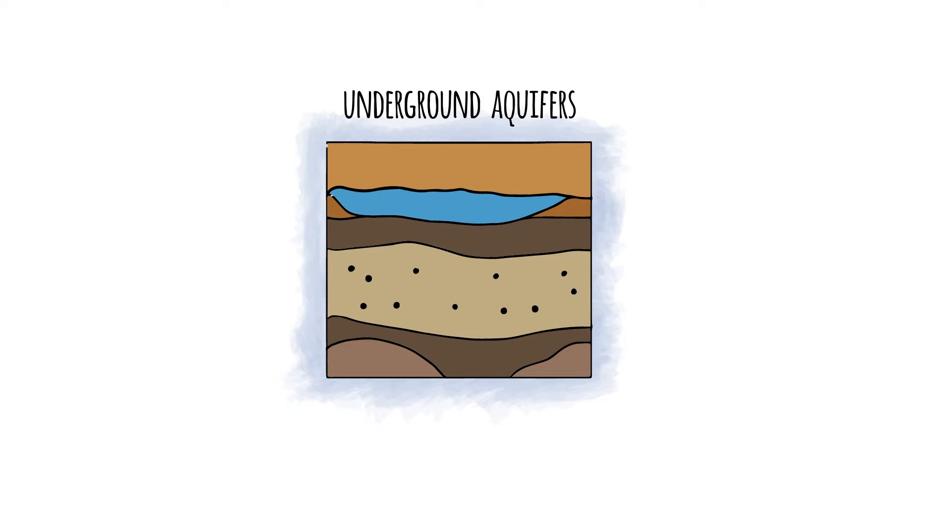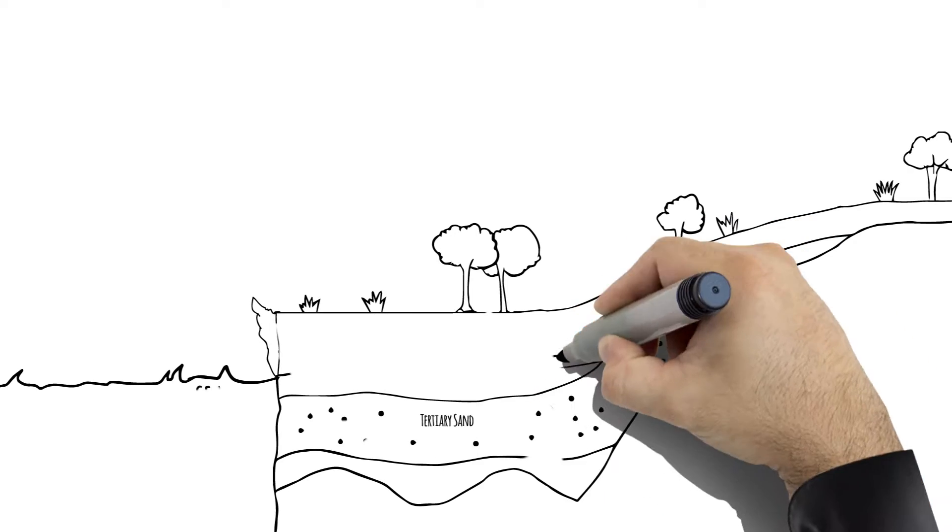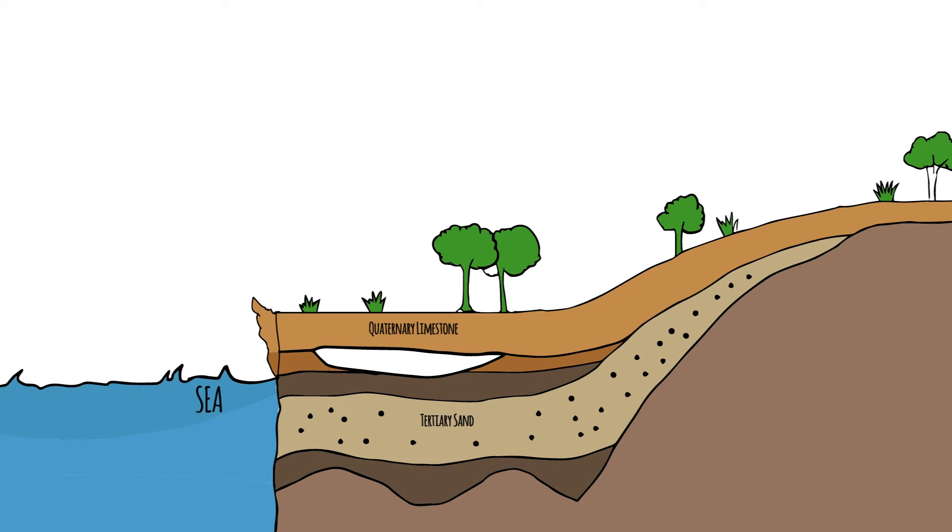Within these aquifers there are areas that are saturated with water and other areas that are unsaturated or dry. The most important aquifer in the prescribed wells areas is the Quaternary Limestone Aquifer, which consists mainly of ancient sand dunes trapped in old valleys.